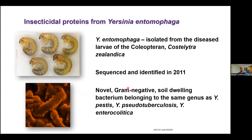To get started, I'll introduce the organism that got us interested in these toxins: Yersinia entomophaga. This is a member of the Yersinia genus and an insect pathogen — which is where it gets the name 'entomophaga' from. It was first isolated from diseased larvae of the coleopteran Costelytra zealandica, shown on the left here. This isolation was reported in 2011, and it was discovered to be a novel gram-negative bacterium belonging to the same genus as well-known Yersinia species.